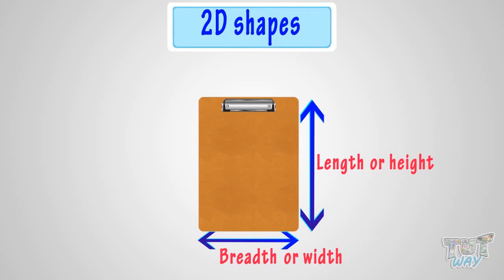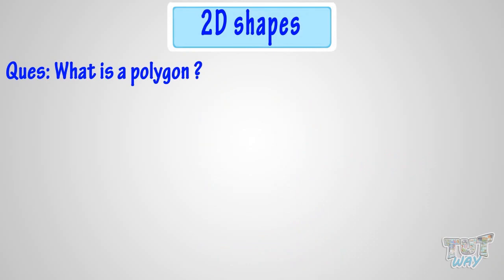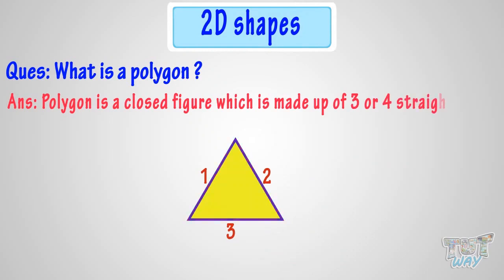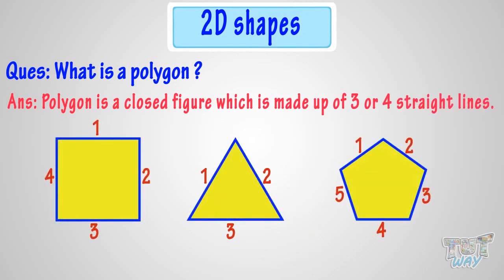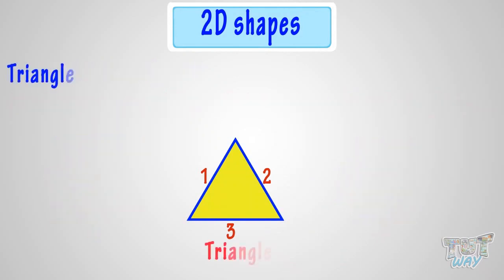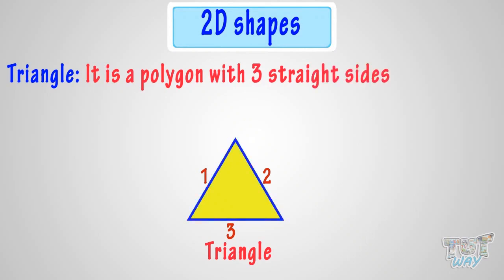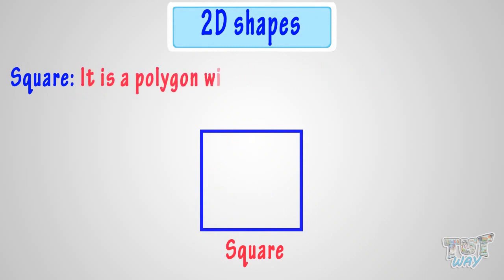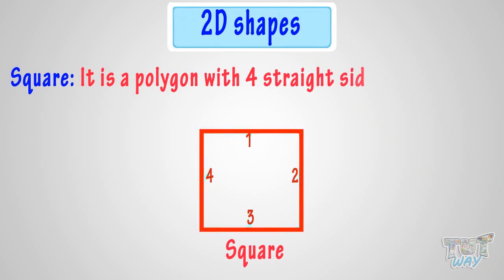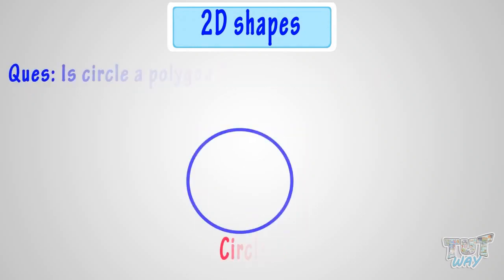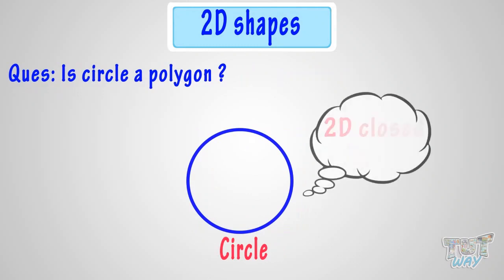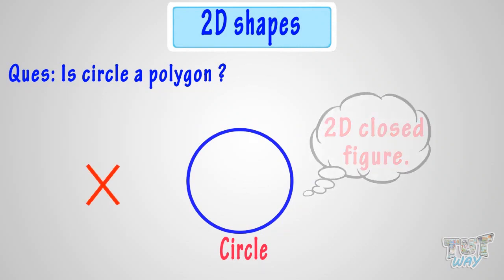Do you know what is a polygon? A polygon is a closed figure which is made up of three or more straight lines. For example, a triangle is a polygon with three straight sides, and a square is a polygon with four straight sides. Is a circle a polygon? A circle is a 2D closed figure, but it is not made up of straight lines, so it's not a polygon.